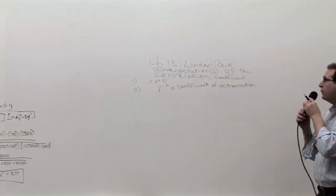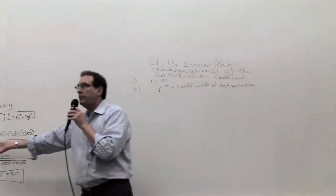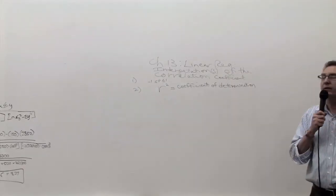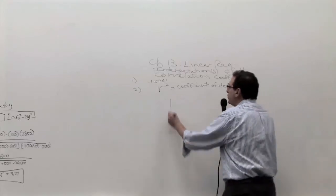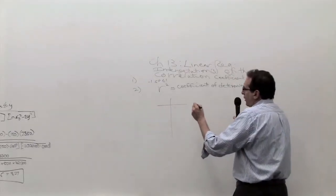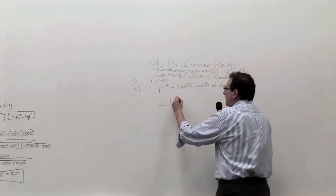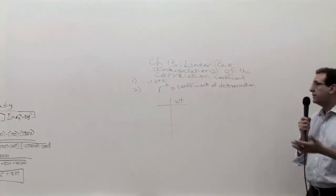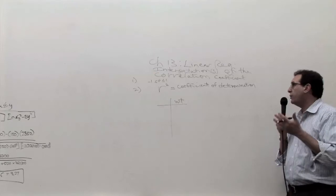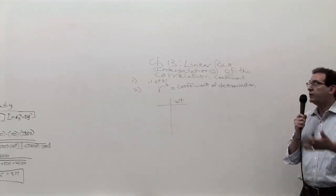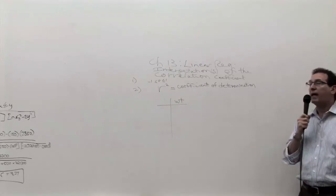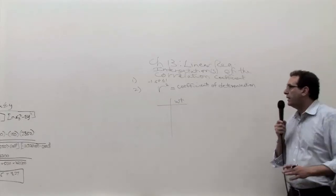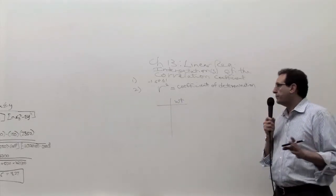In order to explain what the R squared means when you get an answer of, for example, 68 percent, I'd like to resort to a science fiction type of a story. Imagine a planet where somebody's weight literally does not depend upon anything. It doesn't depend upon your age, your height, your sex, your parents' weight, your exercise, the calories you consume. All those things affect somebody's weight on Earth. But this science fiction planet, there is nothing, nothing affects somebody's weight.